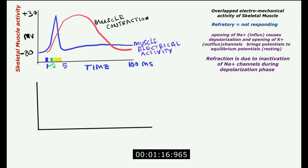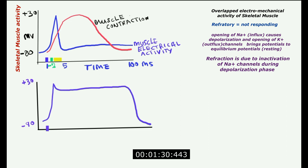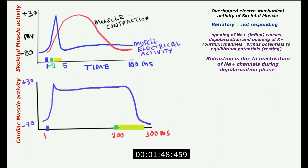In the cardiac muscle, the same electrical activity is superimposed on the mechanical activity. The resting membrane potential on the y-axis is minus 90 millivolts. At the point of stimulus, the potential reaches plus 30 millivolts, followed by a plateau stage. The green point on the x-axis marks the absolute refractory period, which extends to about 200 milliseconds, while the completion of the full action potential takes around 300 milliseconds.